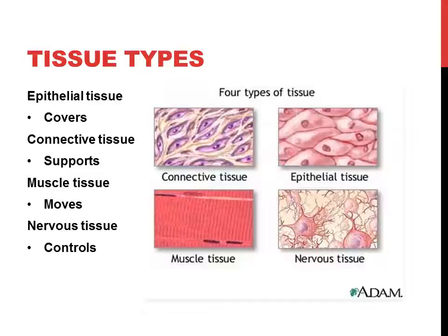We also have connective tissue, probably the most broad type. It contains all different types of tissues — even blood and bone. In general, connective tissue is a structural tissue that supports the body. Bones support the body, tendons and ligaments support the body, reticular tissue helps support different vessels and arteries. It even supports epithelial tissue.